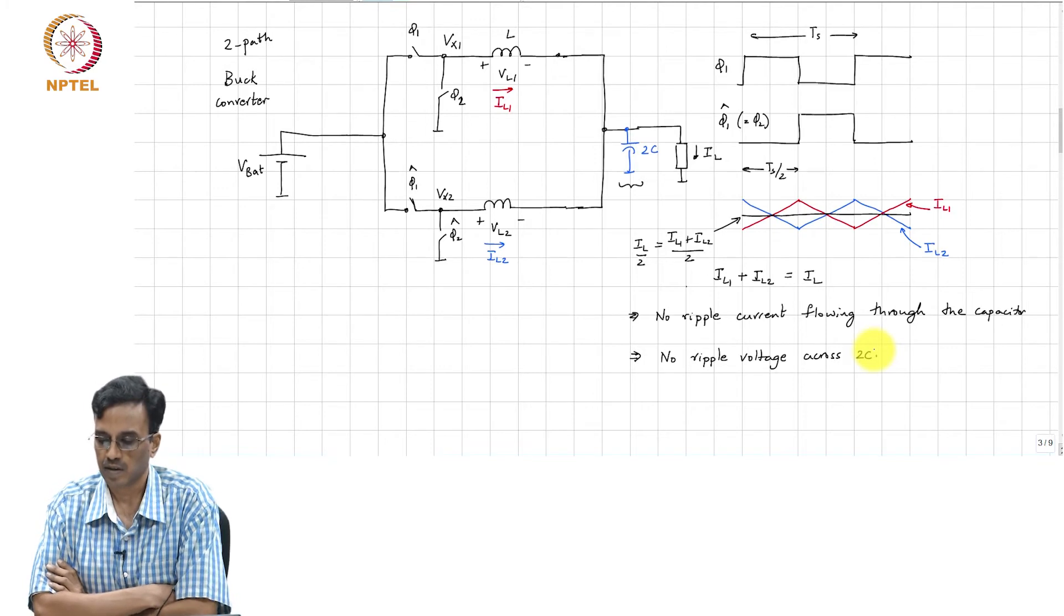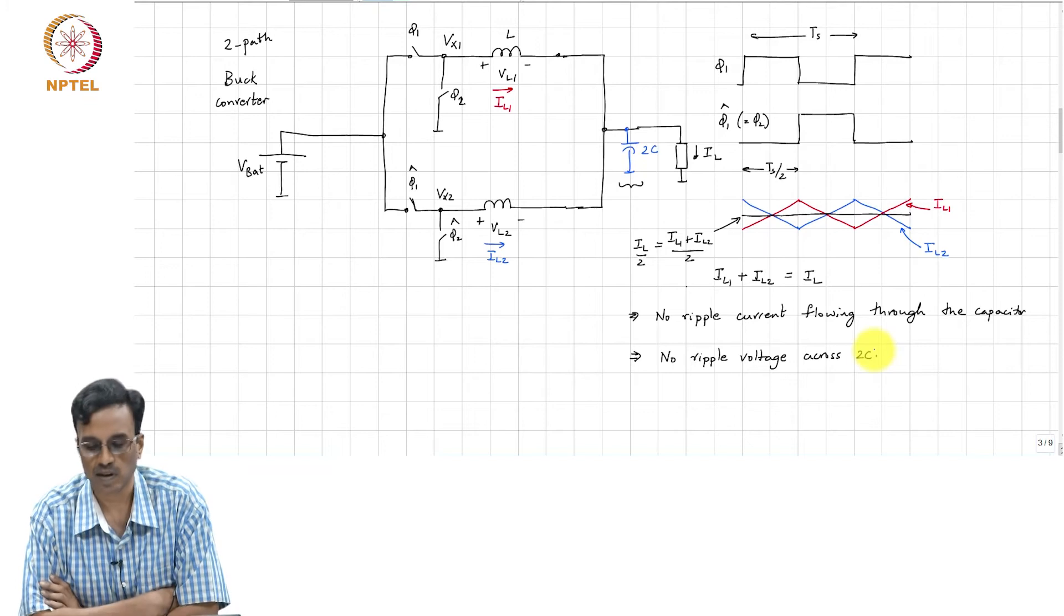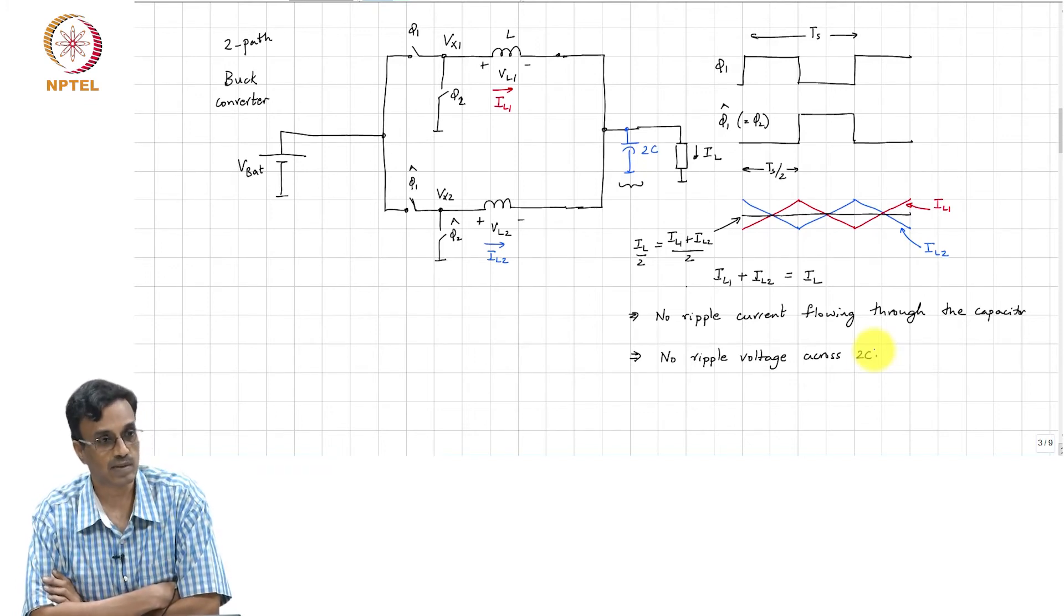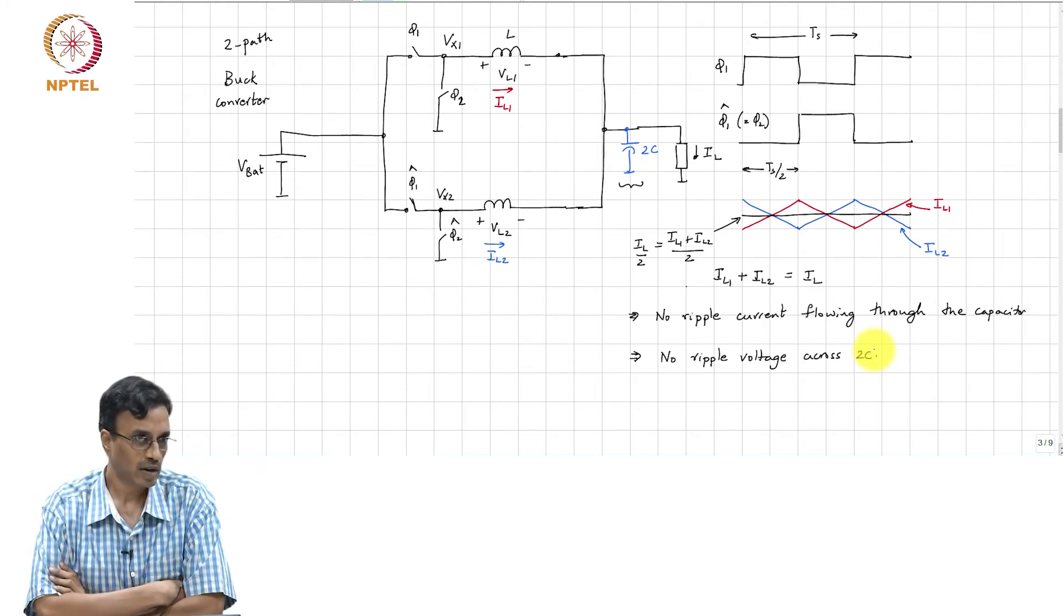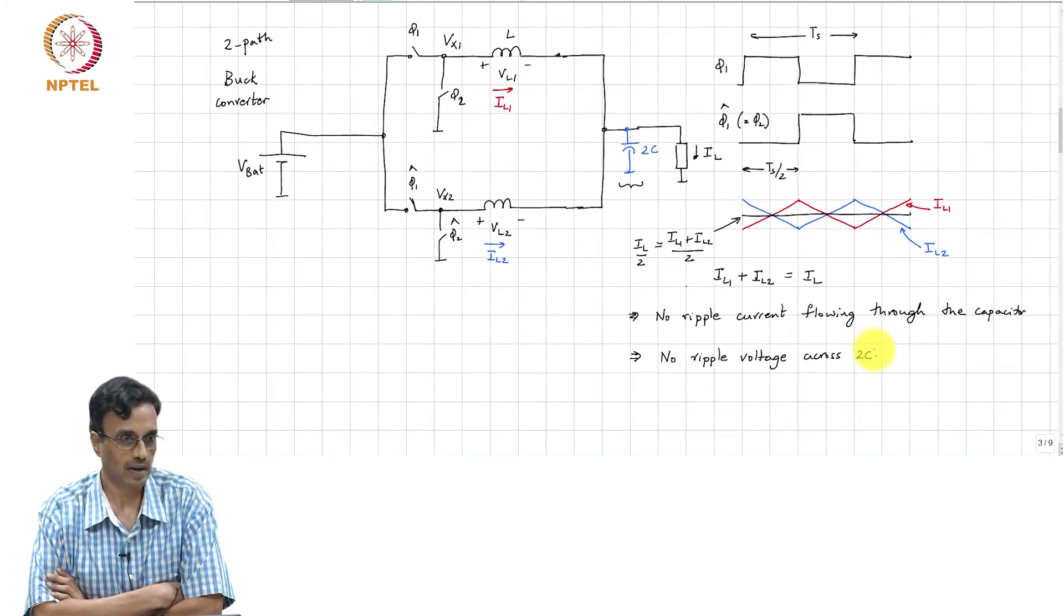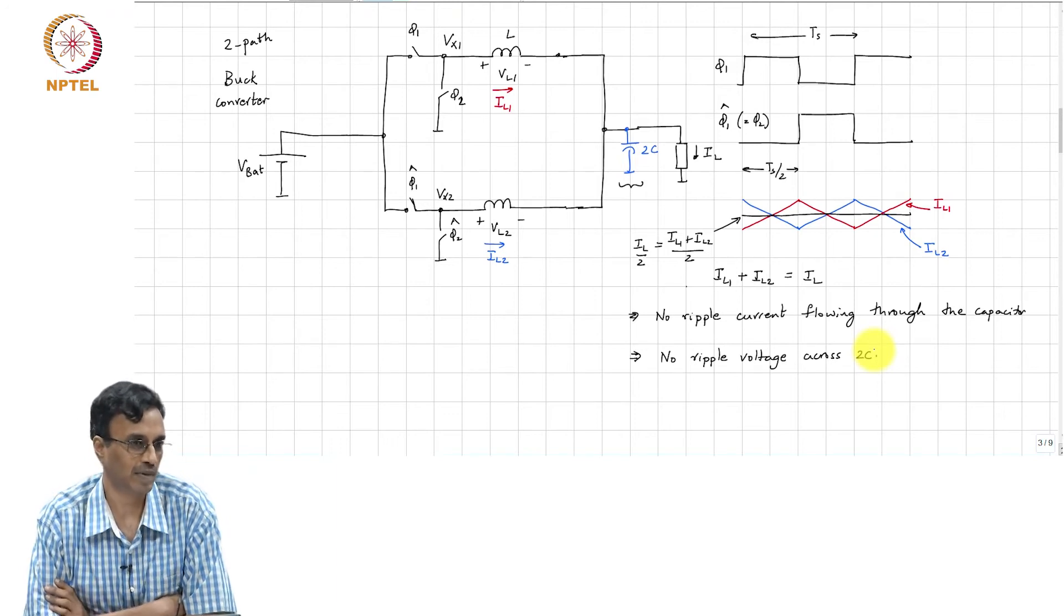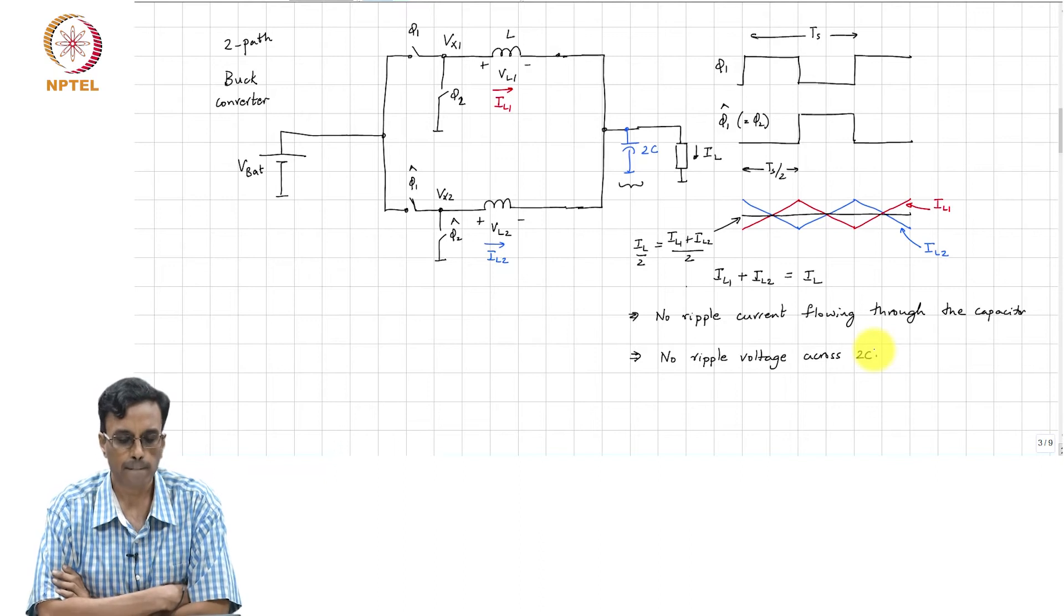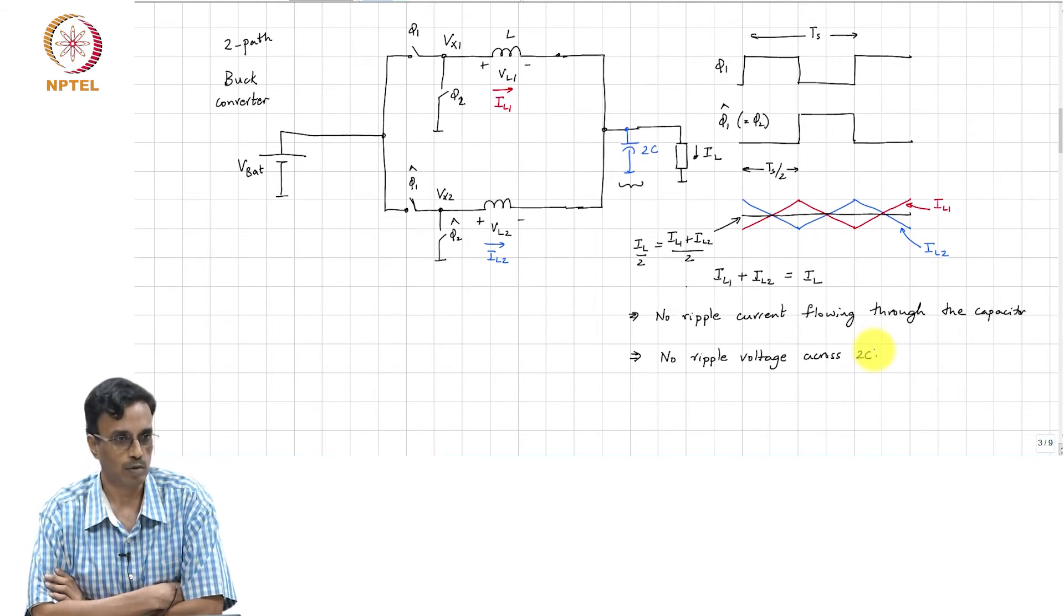This is how the use of two paths is completely eliminating ripple. Whereas if you have to do this with a single path, the only way that would be possible is if L and C became infinite. And you can see this ripple becoming 0 is achieved through cancellation, whereas increasing L and C is achieved by division. Of course in practice, the two currents IL1 and IL2 will not be exactly the same, so there will be some residual ripple, but as a principle you can see that the ripple at the output is supposed to be 0.